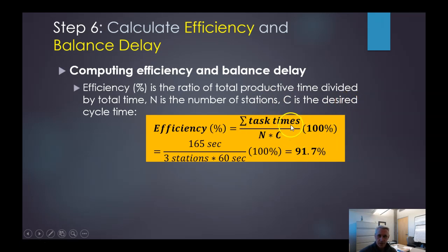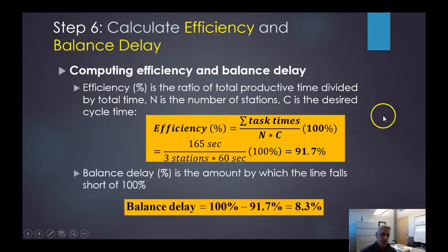So again, we're using that total task time divided by N times C times 100%. So we have 165 seconds divided by 3 stations times 60 seconds. So that's why stations would cancel. So we're getting an efficiency relatively of 91.7% of what we can do. So our balance delay then is simply 100% minus this 91.7%, which means we roughly have about 8.3% where we're not quite at 100% efficiency.